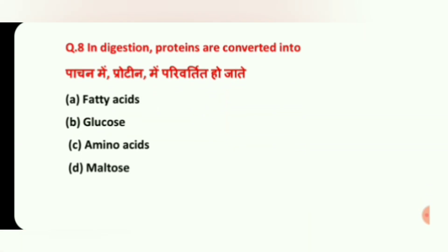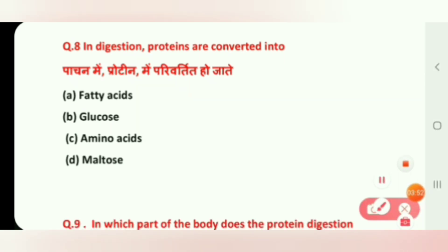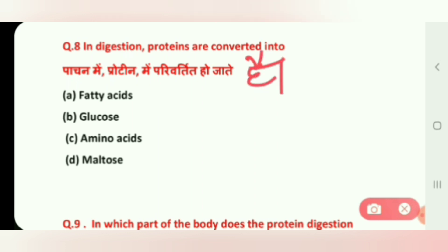During digestion, proteins are converted into what? Options are: fatty acids, glucose, amino acids, and maltose. The correct answer is C, amino acids.